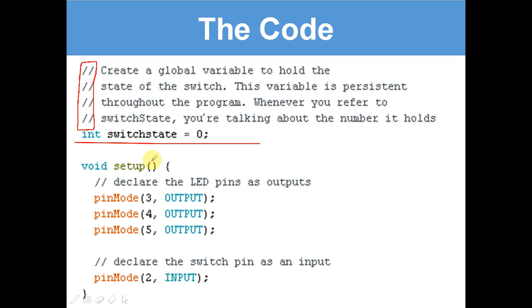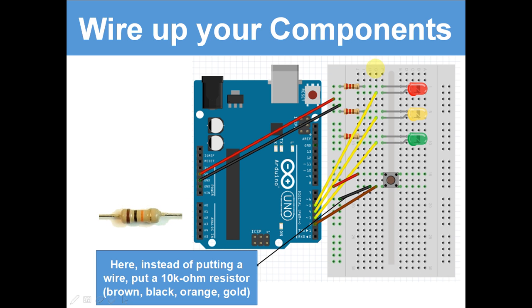Okay, now we've got void setup. We've talked about in the past, void setup with two brackets facing each other and opening curly bracket and ending curly bracket. It sets up the program for the loop. Declare the LED pins as outputs. pinMode 3 output, pinMode 4 output, and pinMode 5 output. If we go back to here, the anode of each LED is connected to 3, 4, and 5.